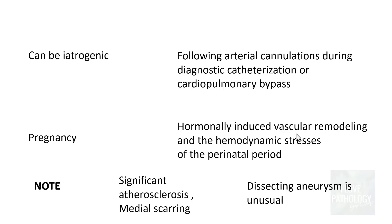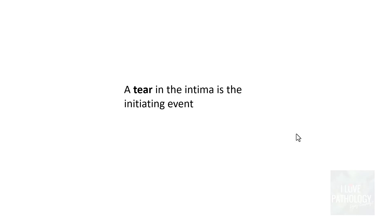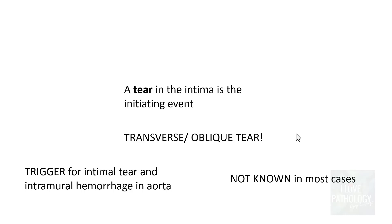The reason is that for dissection to occur, for blood to seep into the tunica media, the media should be degenerated — it should have undergone necrotic change or weakening. Regarding the pathogenesis of aortic dissection, the most important thing to understand is that the tear in the intima is the initiating event. These tears are always transverse or oblique. The trigger for the intimal tear and intramural hemorrhage into the aorta is not known in most cases; it is assumed to result from sheer hemodynamic pressure in hypertensive patients causing spontaneous tear in the tunica intima.